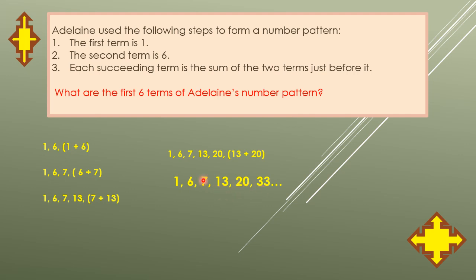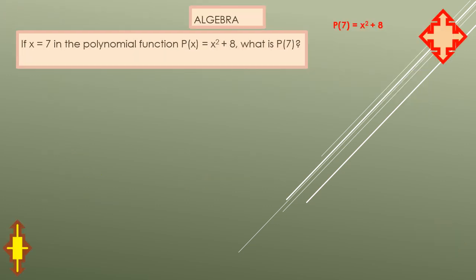Let us now review a little of algebra. If x equals seven in the polynomial function p of x equals x squared plus eight, what is p of seven? When you're given x equals seven, that's a replacement for x. So p of seven equals x squared plus eight. Replace x with seven. What happens is seven squared plus eight. What is seven squared? Seven times seven, so that will be 49 plus eight. Adding 49 and eight, that will be 57. So p of seven equals 57.